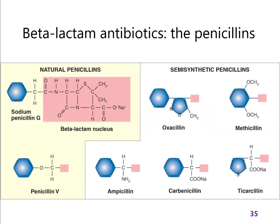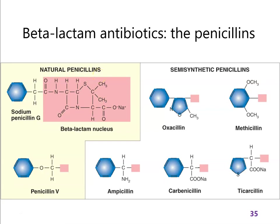What all penicillins have in common is the molecule inside this box — which contains a beta-lactam ring. Beta-lactam refers to the chemical structure. What's important is that this mimics peptidoglycan to some extent, so the transpeptidase enzyme tries to react with it and gets permanently poisoned. All penicillins work the same way: they all have this beta-lactam that reacts with and inactivates the transpeptidase enzyme.